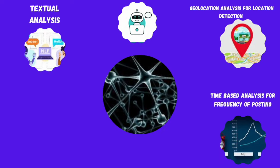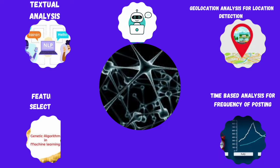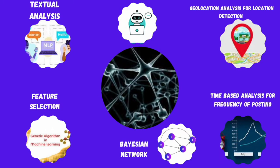We are employing various NLP techniques to extract meaningful information from these sources. Subsequently, we are utilizing genetic algorithms to pinpoint the most crucial features from the gathered dataset. We then employ dimensionality reduction techniques to streamline the data, taking into account the model's complexity. Finally, post pre-processing, we feed the refined data into a deep Bayesian belief network to predict the authenticity of the profile — determining whether it is genuine or potentially fraudulent.